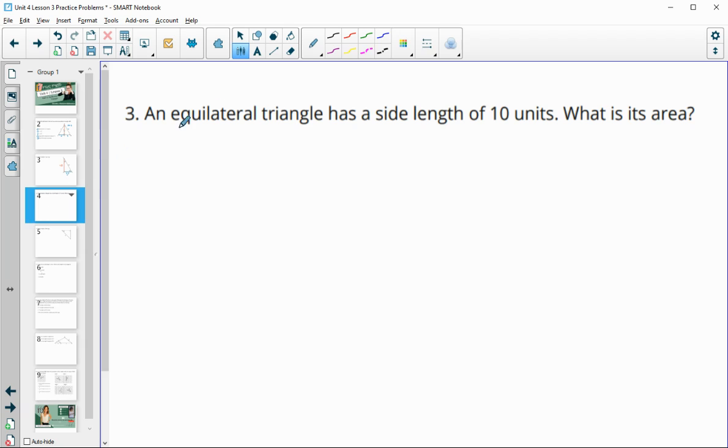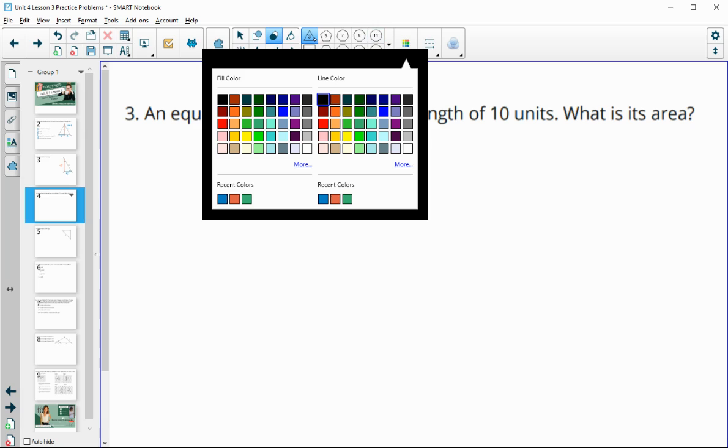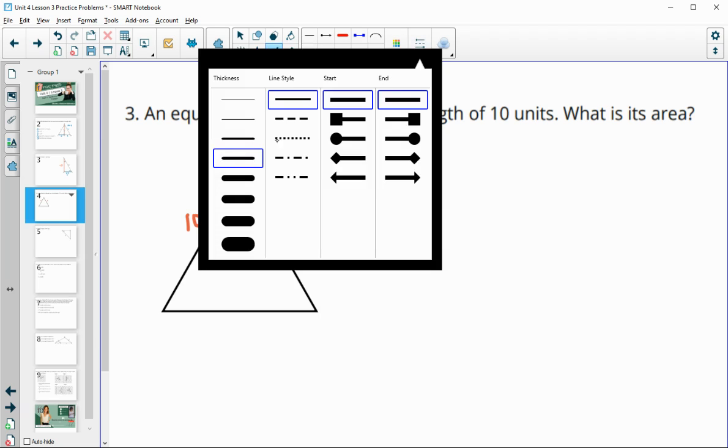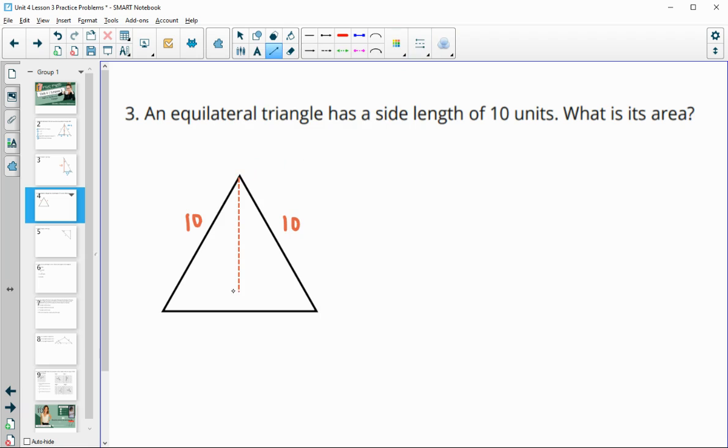Number 3, an equilateral triangle has side lengths of 10. What is its area? So let's get a triangle drawn here. And each of the sides is 10. And then we want to know the area. So I'm going to leave that bottom one blank because in order to do the area, we need the height.